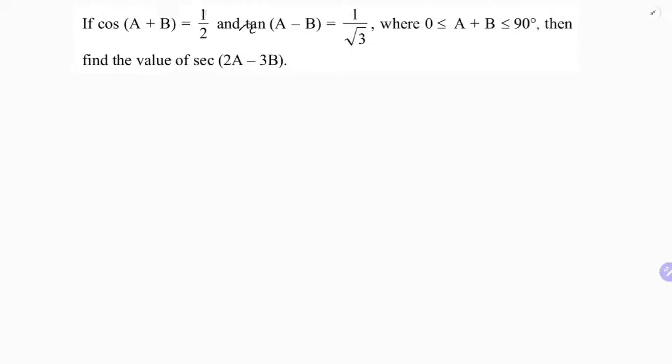If cos(A + B) is 1 by 2 and tan(A - B) is 1 by root 3, where 0 ≤ A + B ≤ 90°, then find the value of sec(2A - 3B).